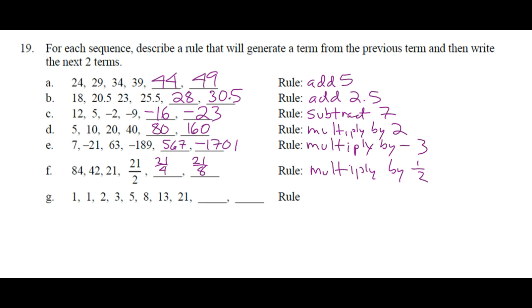1, 1, 2, 3, 5, 8, 13, 21. What's the rule? Add the two previous terms together. Go ahead. Do it. Keep going.